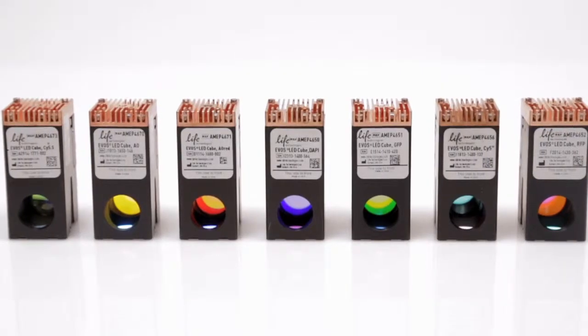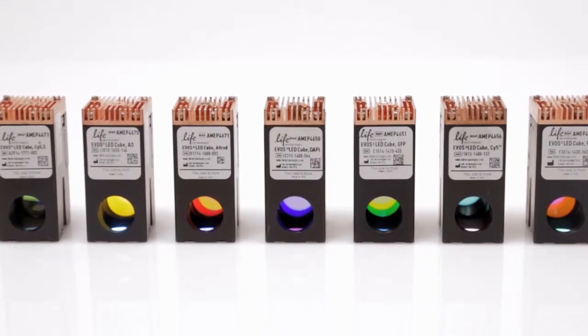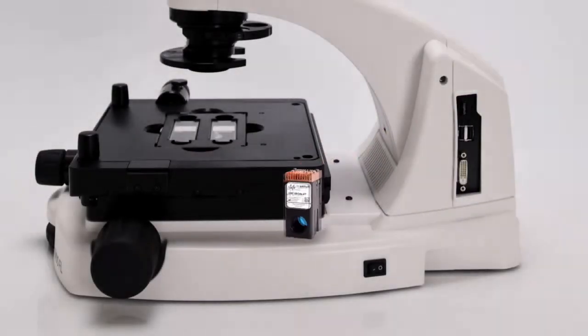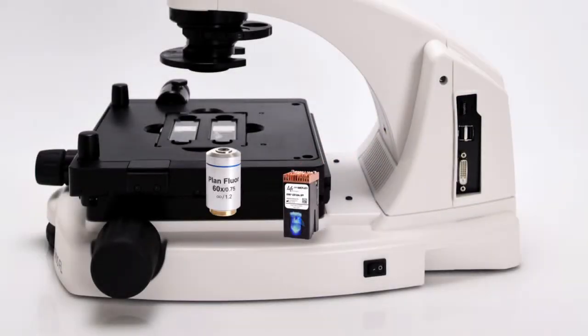EVOS light cubes, which contain both the LED excitation source and emission filters, are located directly below the sample, creating a short fluorescent light path. This efficient light path helps increase collection of the fluorescent signal and reduces the effects of photobleaching.